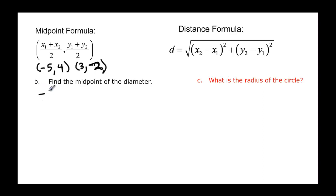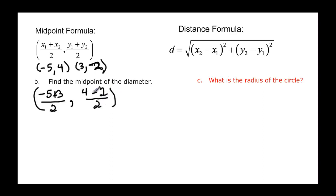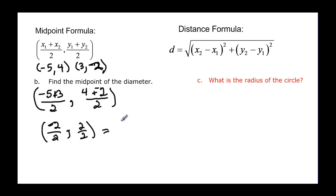For the x's, we take negative five plus three, and then divide that by two. For the y's, we take four plus negative two, and divide that by two. Negative five plus three is negative two over two, and four plus negative two is two over two. Simplifying, we find that the midpoint is at negative one, one.